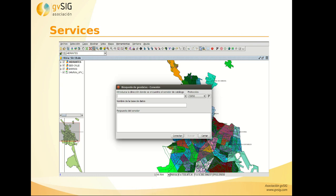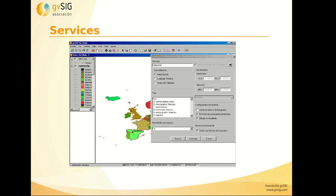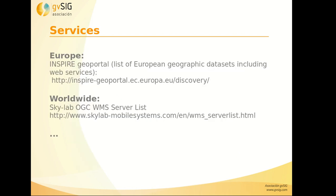Here we can see how we can look for cartography in GBC. And the other service is the location by place name or nomenclator. In this case, in an atlas we can look for the place name by page and grid. And in the nomenclator, in our application in GBC, we will get the geographic coordinates, so it will zoom to that place name. Here we can see how we can look for a place in a server. In the case of Spain or Europe, we can find different web services in that URL. And for worldwide, we can also find several servers at that URL. Each country has their own spatial data infrastructure, most countries in the world, so you can look for different web services for each country.